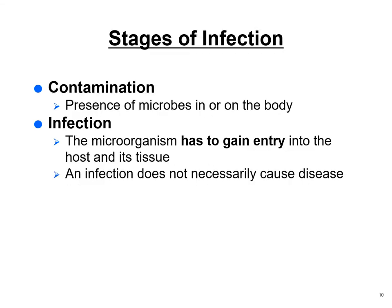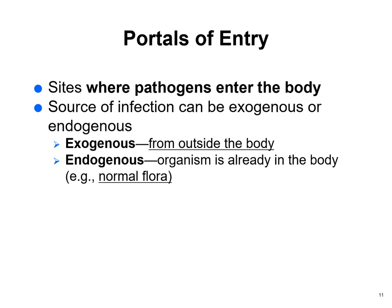The stages of infection: contamination means the microbes are present. Infection means they've gained entry into the tissue — but you still may not develop disease if you fight it off quickly. Portals of entry are where pathogens enter the body. Pathogens can be exogenous, coming from an outside source, or endogenous, already present as normal flora — like C. diff, which is normal flora in your gut but shouldn't be present in large amounts.